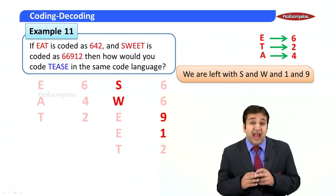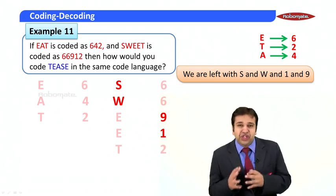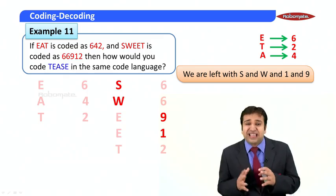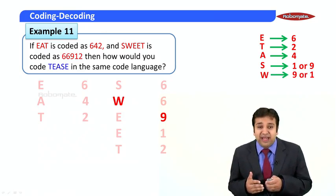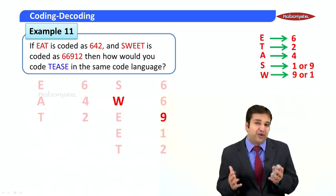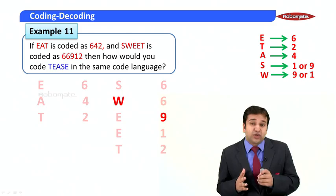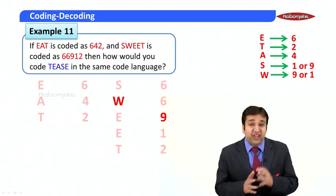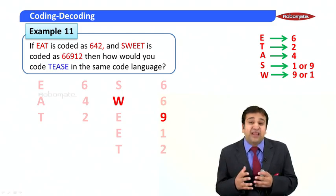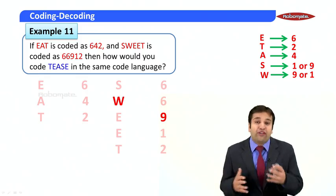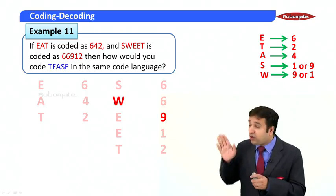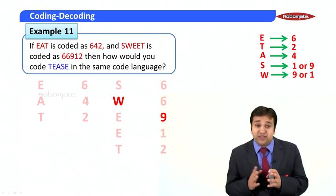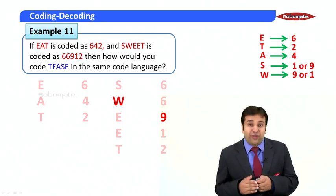We are now left with s and w, and two numbers: 9 and 1. Can we determine what s and w are? S can either be 1 or 9, and w can be 9 or 1. If s is 1, w will be 9; if s is 9, w will be 1. We can only solve to this level — nothing else is given to uniquely decode s and w. Had another word been provided, we could have resolved this. So: e=6, t=2, a=4, s=1 or 9, w=9 or 1.